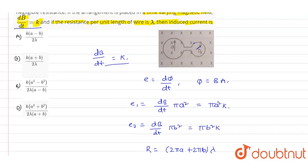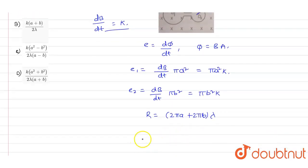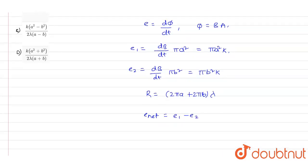This is the resistance per unit length of the wire, where λ is the resistivity. The net EMF will be ε_net equals ε₁ minus ε₂. When we subtract the EMF from the first circle from the second circle, we write πk(a² - b²). This is